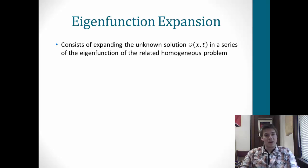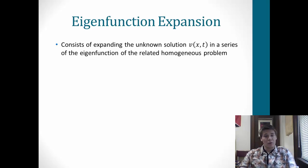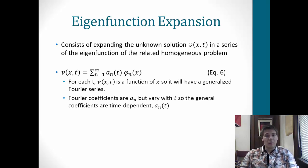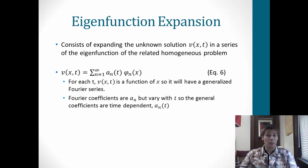For eigenfunction expansion, it consists of expanding the unknown solution v(x,t) into a series of the eigenfunctions of the related homogeneous problem. So we get: v(x,t) = summation from n=1 to infinity of a_n(t) times φ_n(x). This, equation 6, is actually going to be our solution — we just need to find all the components, specifically what a_n(t) is and what φ_n(x) is.